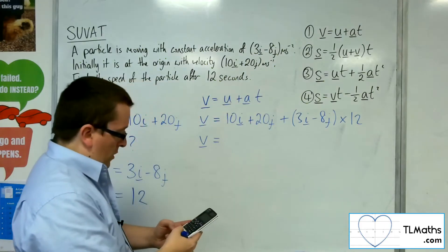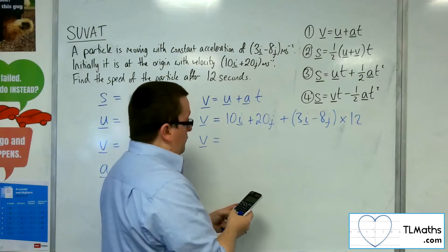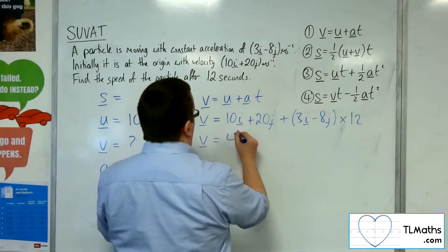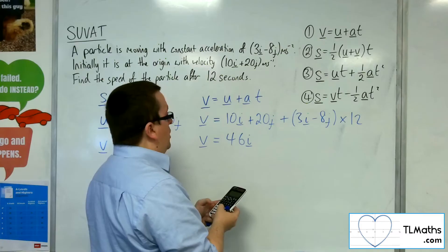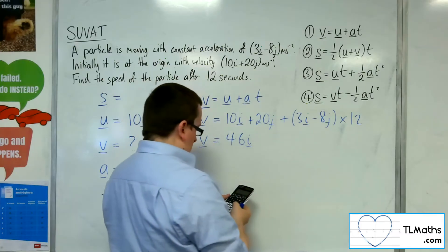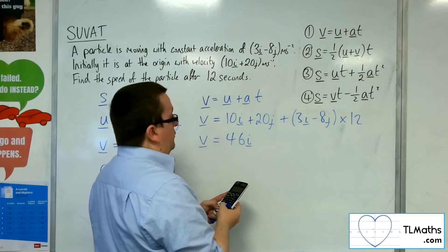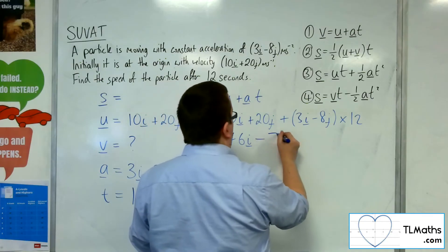Right, so we've got 10 plus 3 lots of 12, so 46i. And then we've got 20j take away 8 lots of 12, so minus 76j there.